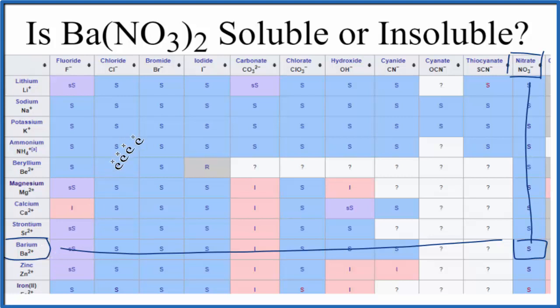There is one more way we could test to see whether Ba(NO3)2 is soluble or insoluble. We could just take some crystals of Ba(NO3)2, the barium nitrate, drop it in water, and see what happens. We would expect, based on this chart here and the solubility rules, that it would be soluble in water.